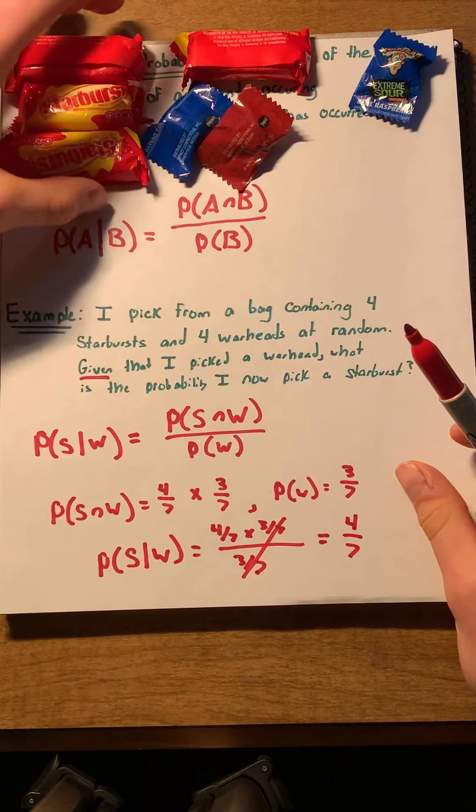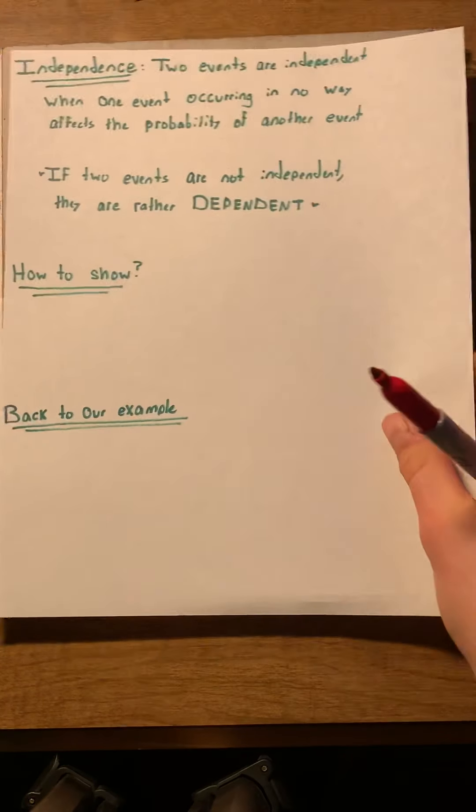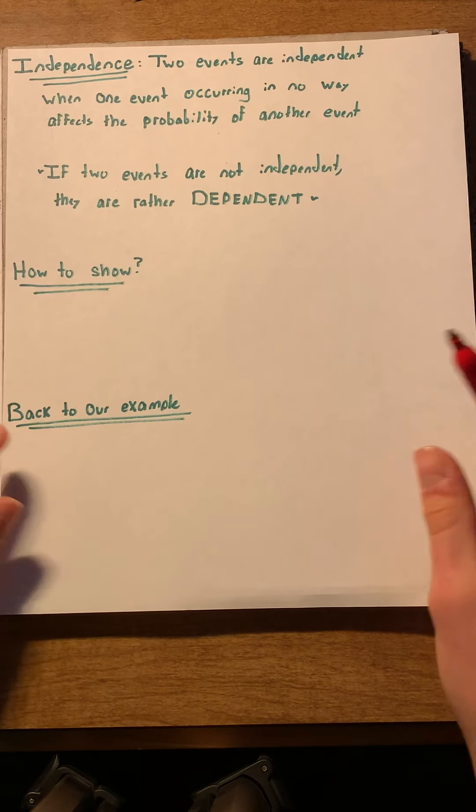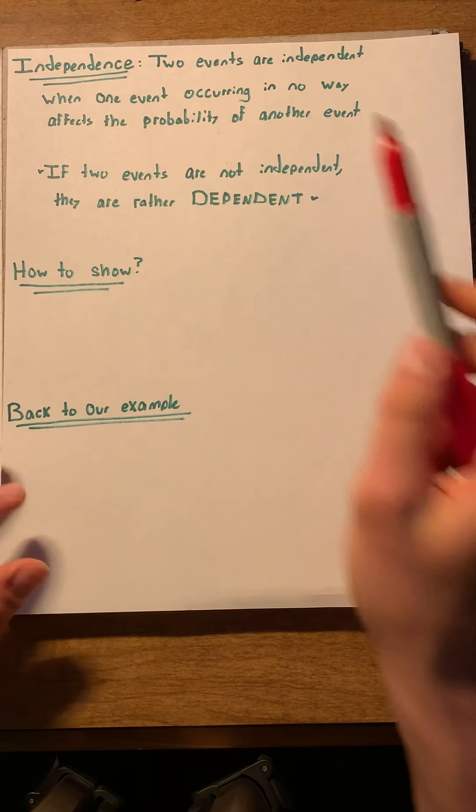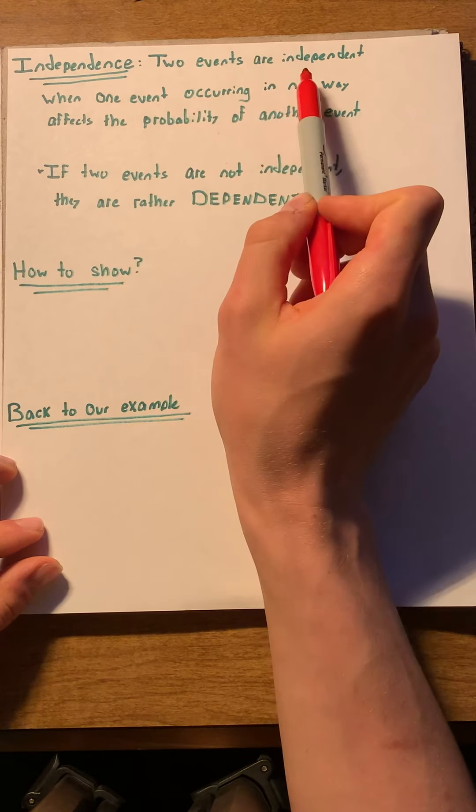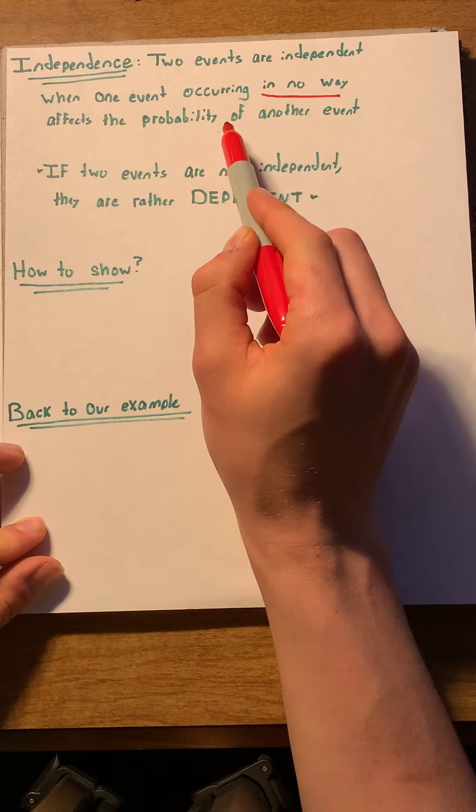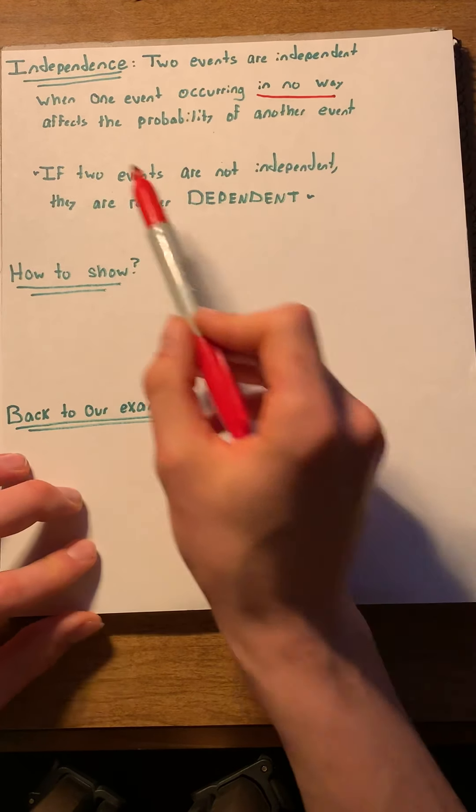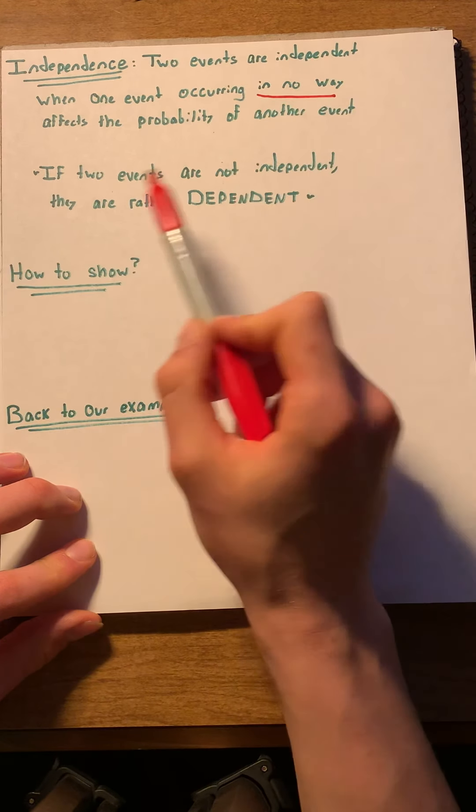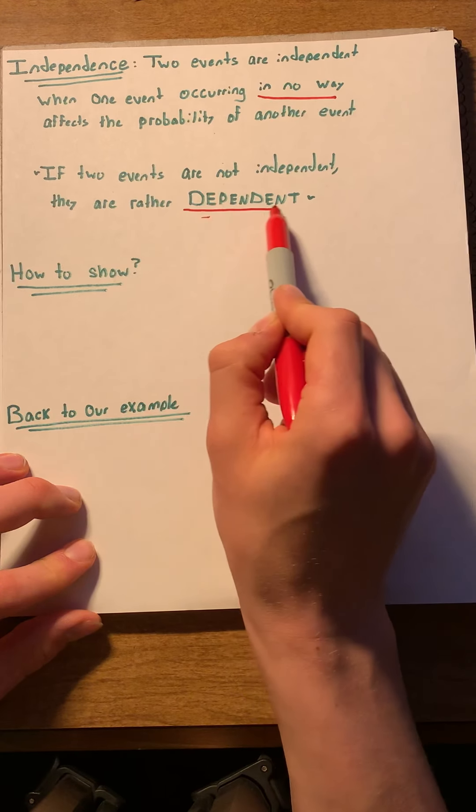Now, conditional probability is also really useful for calculating another thing. And that is independence. The definition of independent events: Two events are independent when one event occurring in no way affects the probability of another event. If two events are not independent, they are rather dependent.